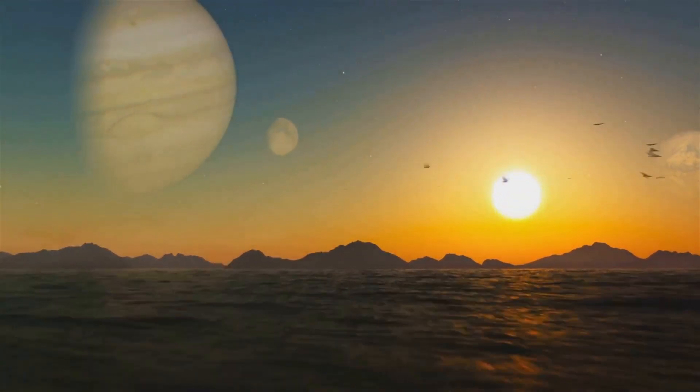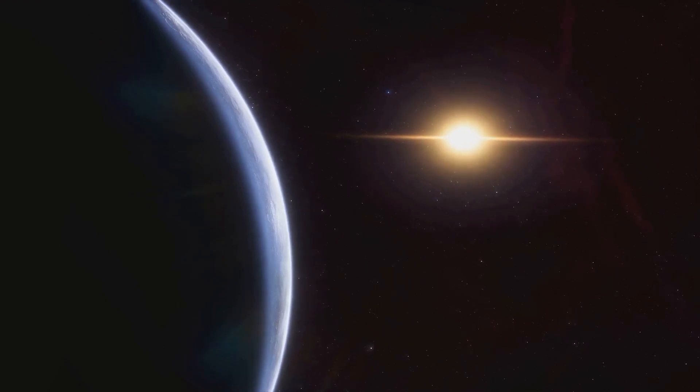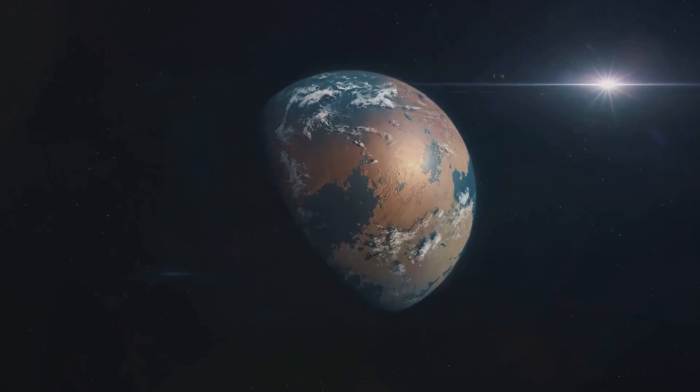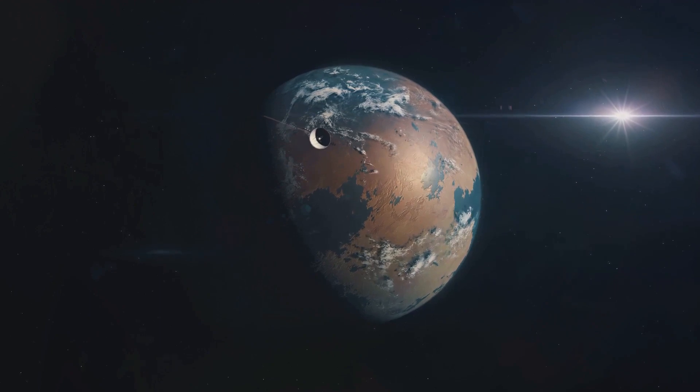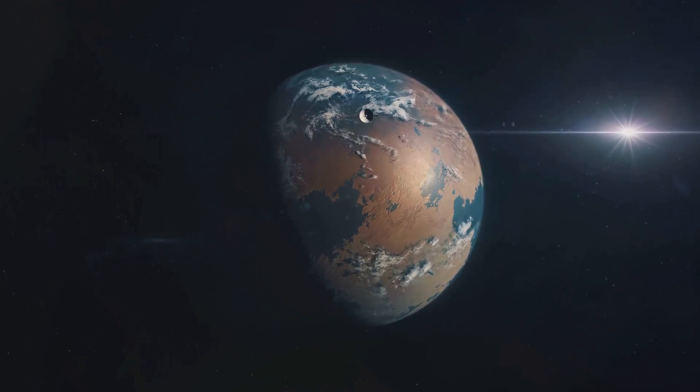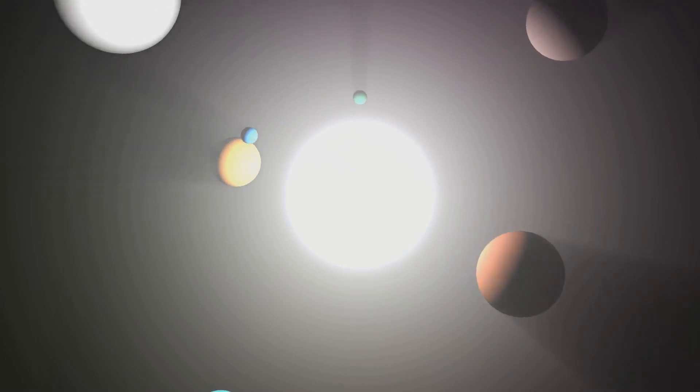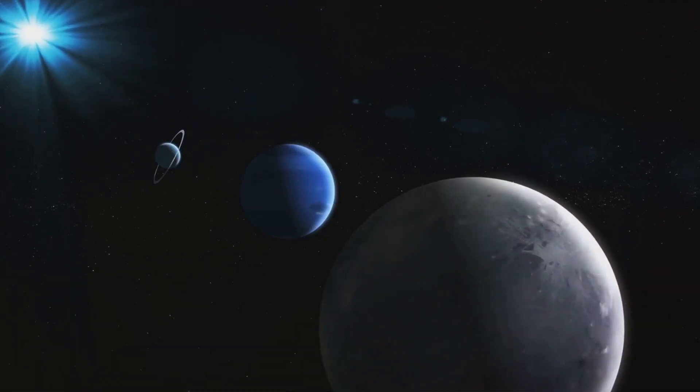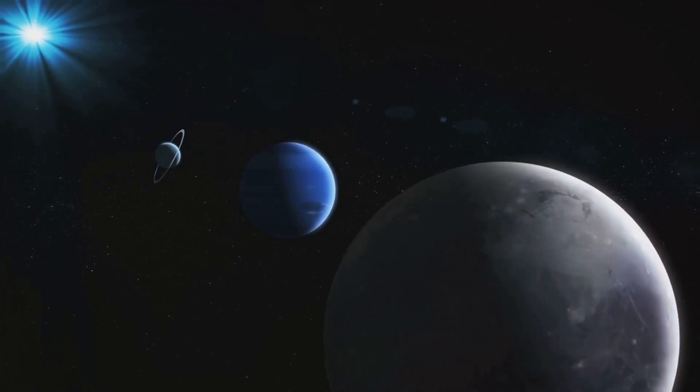And then there's the intriguing Proxima Centauri b, our closest exoplanet neighbor, just over four light-years away. It's in the habitable zone of its star, raising the wondrous possibility that it might harbor life. Exoplanets challenge our concepts of what a planet can be and where life might exist. They are truly one of the most amazing things in space, offering us a tantalizing glimpse into the possibilities of alien life.